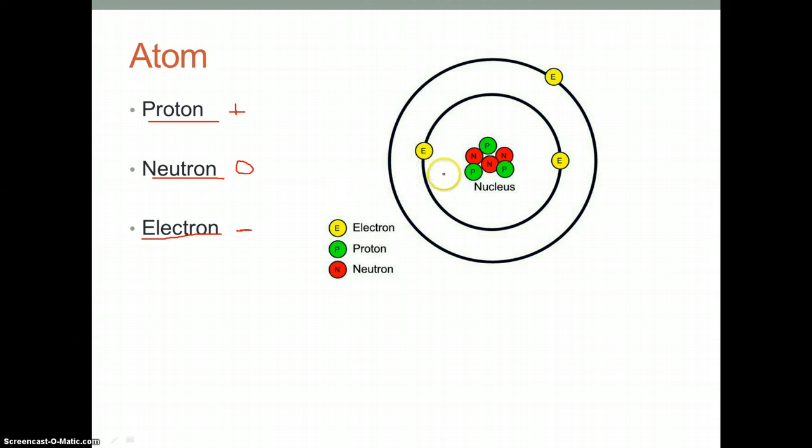Now, within an atom, there is this thing called a nucleus. It is a dense positive center consisting of the protons and neutrons. It is in the center, and around it are electrons that orbit the dense nucleus.